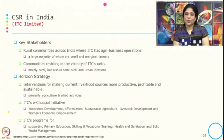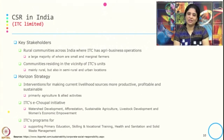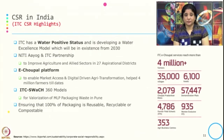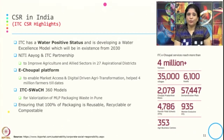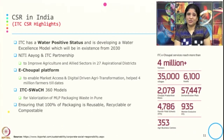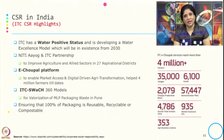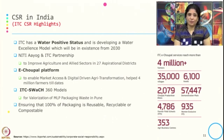ITC also has programs for education, skilling and vocational training, health, sanitation, and solid waste management. They have achieved water positive status. They have also partnered with NITI Aayog to improve agriculture and allied sectors in 27 aspirational districts, and through the e-Choupal platform to enable market access and digital-driven agri transformation, helping 4 million farmers to date.